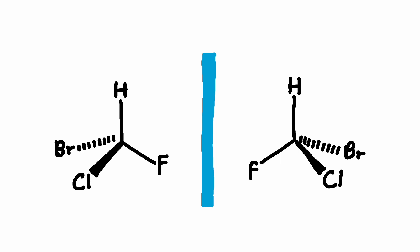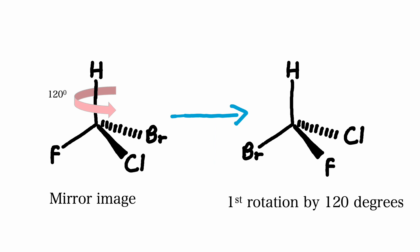You can see here that this molecule cannot be superimposed no matter which way you try to rotate it. Let's rotate this molecule and see. Let's rotate the mirror image of this molecule firstly by 120 degrees. We see that chlorine moves into the page, chlorine comes out of the page, and bromine is on the plane of the page.